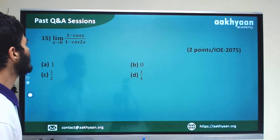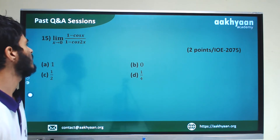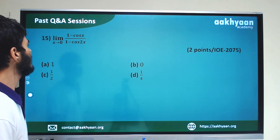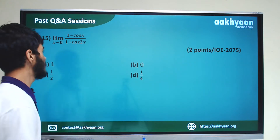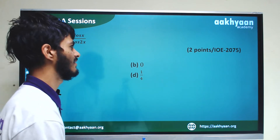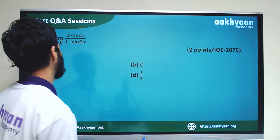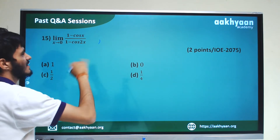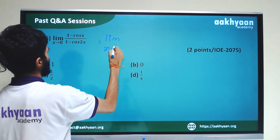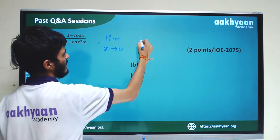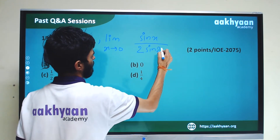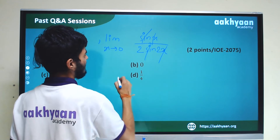In the next problem, we are given limit x tends to 0 of 1 minus cos x by 1 minus cos 2x. We use the identity 1 minus cos x equals 2 sin squared x by 2, and 1 minus cos 2x equals 2 sin squared x. Solving, we get sin squared x by 2 over sin squared x, which gives 1 by 4.